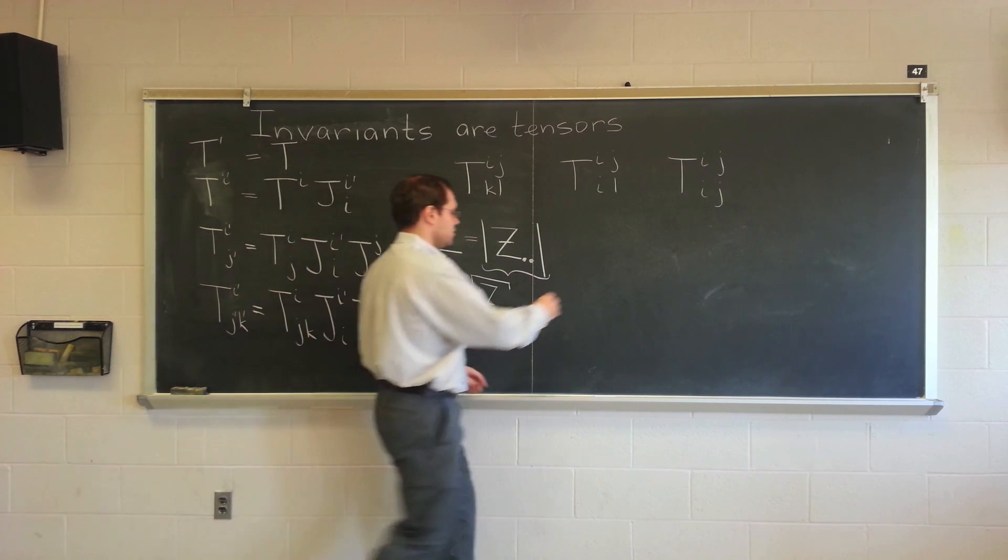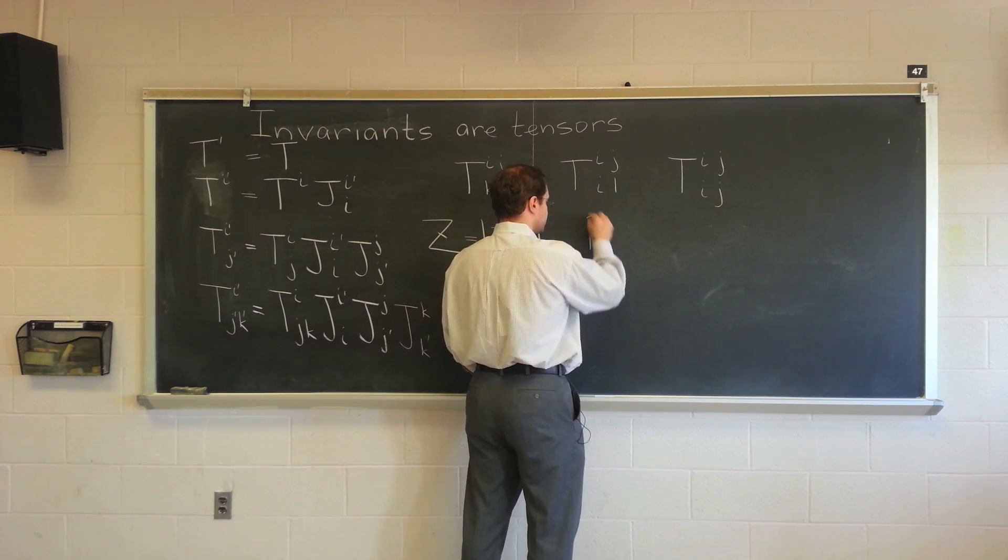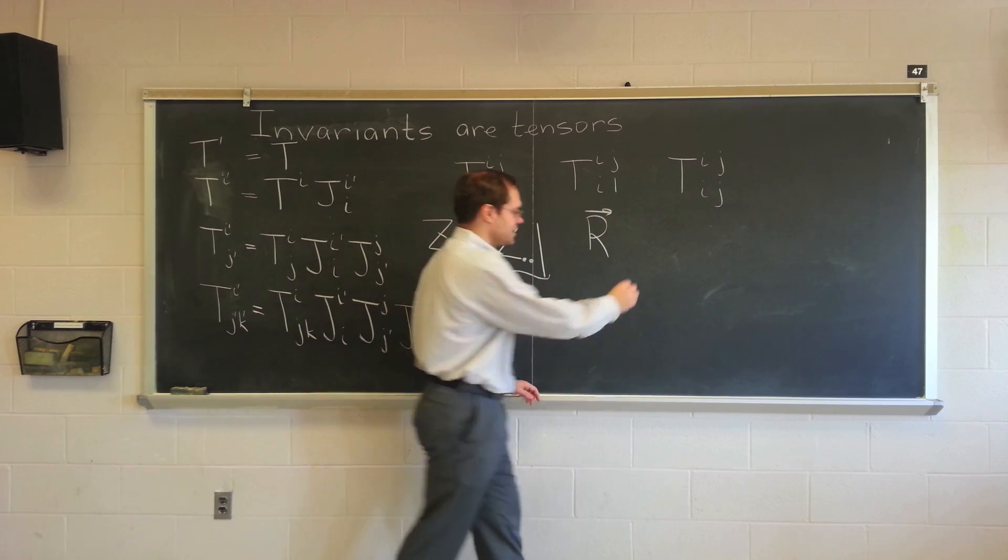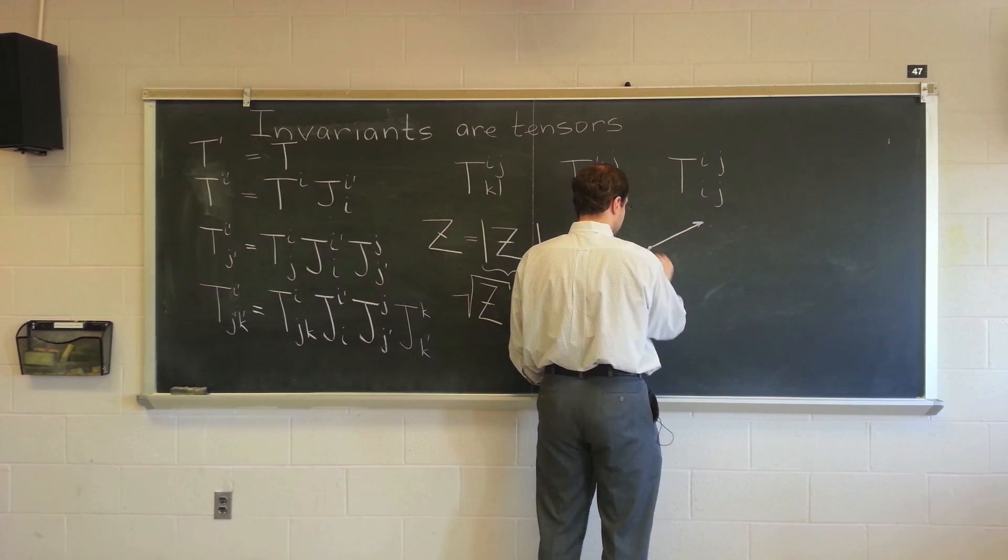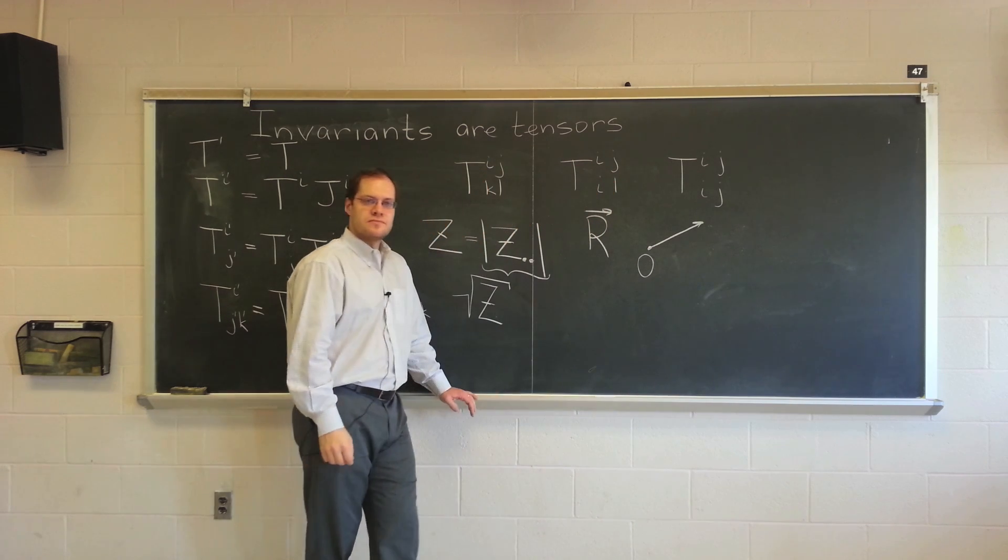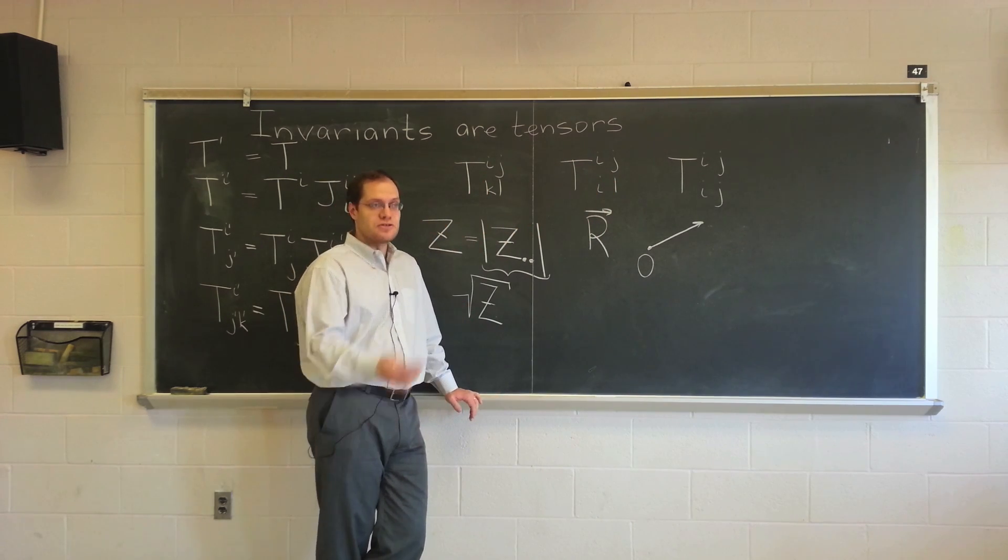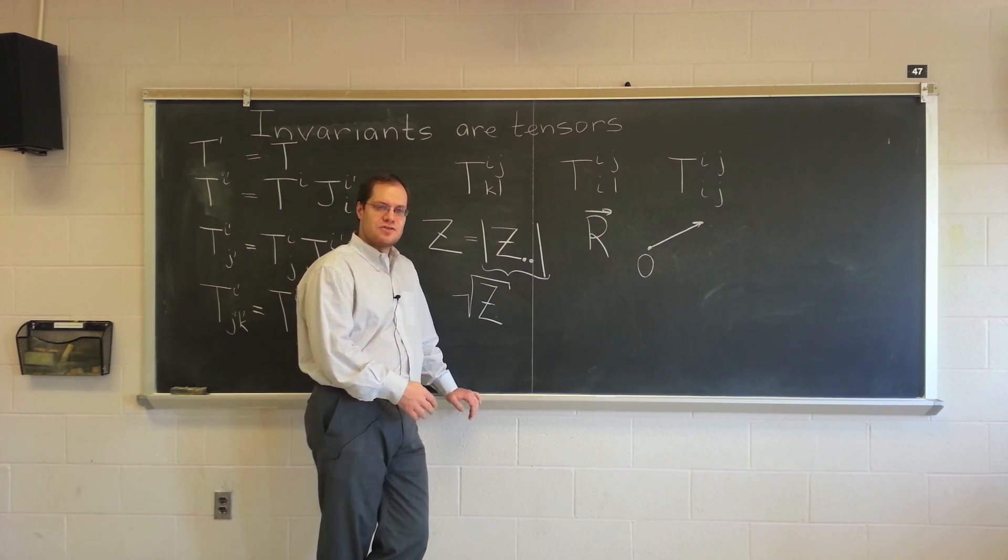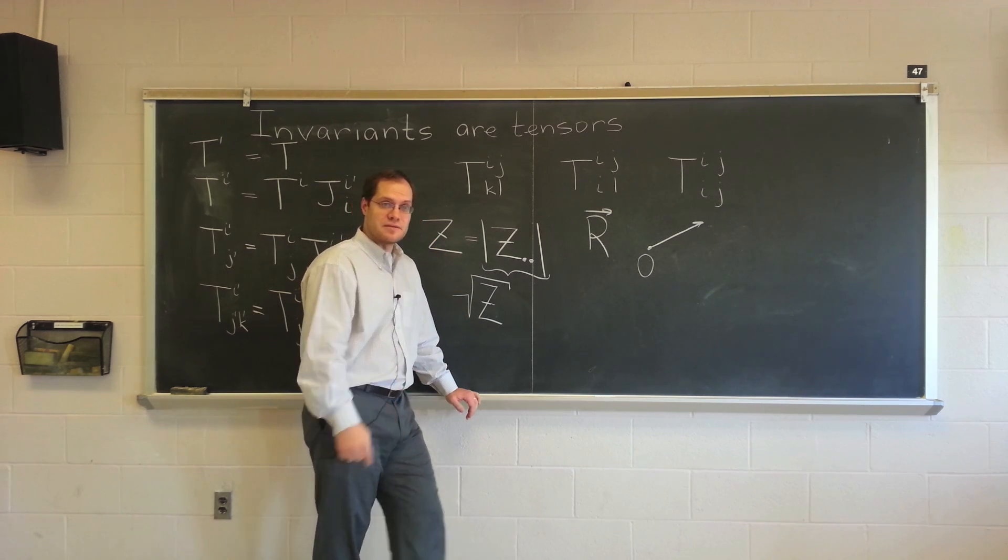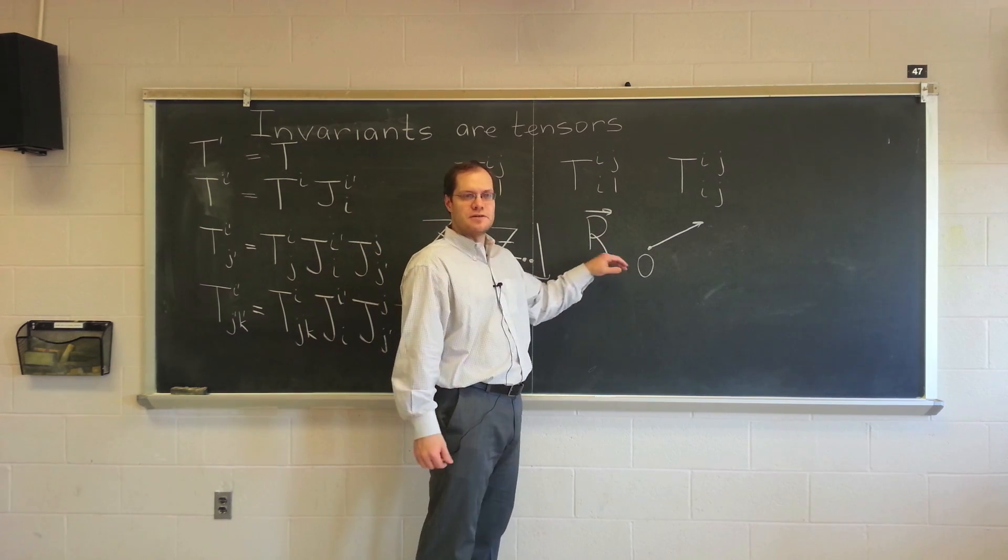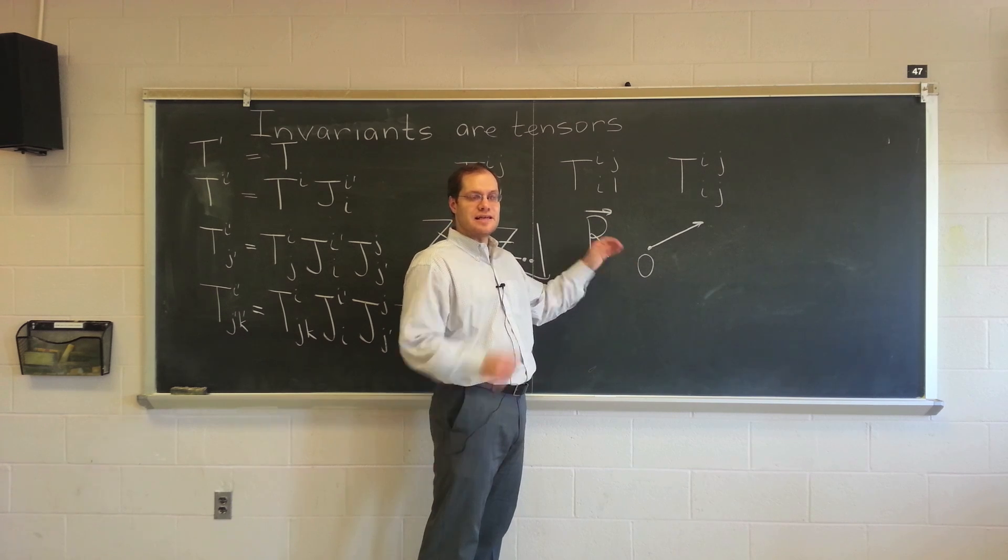The position vector is an invariant. But that has a contravariant component with a covariant basis. No. It's just called, we just call it R. It's defined as an arrow to a point from an arbitrary origin. If you have a velocity field, sure, you can decompose it into its contravariant components and the covariant basis. But before you decompose it, it's just an invariant.